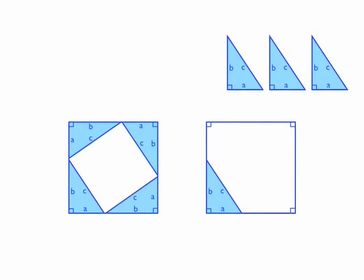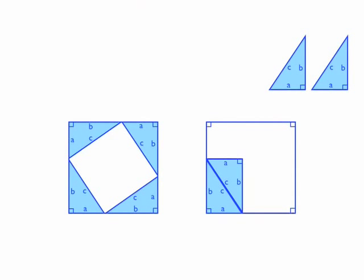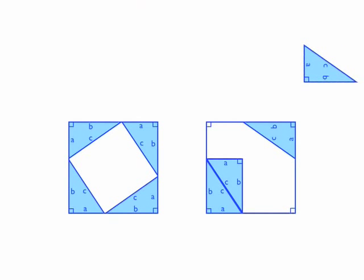The sixth triangle we will rotate 180 degrees and then slide the triangle so that the hypotenuse of the sixth triangle is right next to the hypotenuse of the fifth triangle. Next, let's rotate the seventh triangle clockwise 270 degrees and then slide it into the top right corner of the second square. Now let's rotate the eighth triangle clockwise 90 degrees and then slide it so that the hypotenuse of the eighth triangle is right next to the hypotenuse of the seventh triangle.